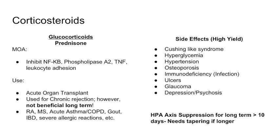Starting with the most important: corticosteroids, specifically prednisone. It has a broad mechanism of action. Importantly for step exams, it inhibits NF-kappa B. It also inhibits phospholipase A2, which acts upstream of COX-1 and COX-2, giving even more anti-inflammatory action. It can also inhibit TNF-alpha and inhibit leukocyte adhesion, so you'll actually see increases in patients' white counts on high-dose steroids.